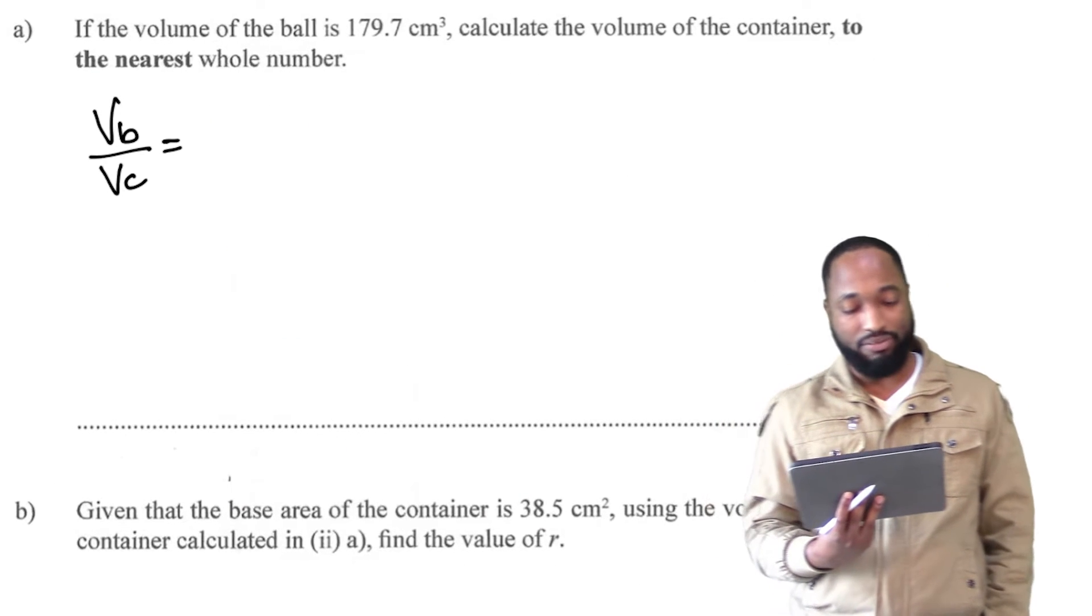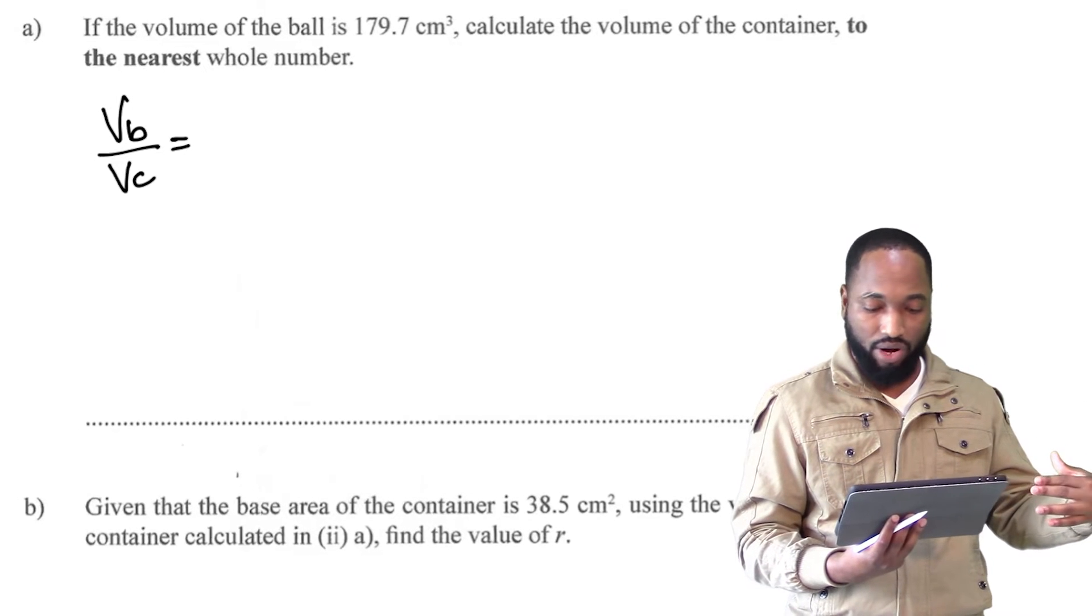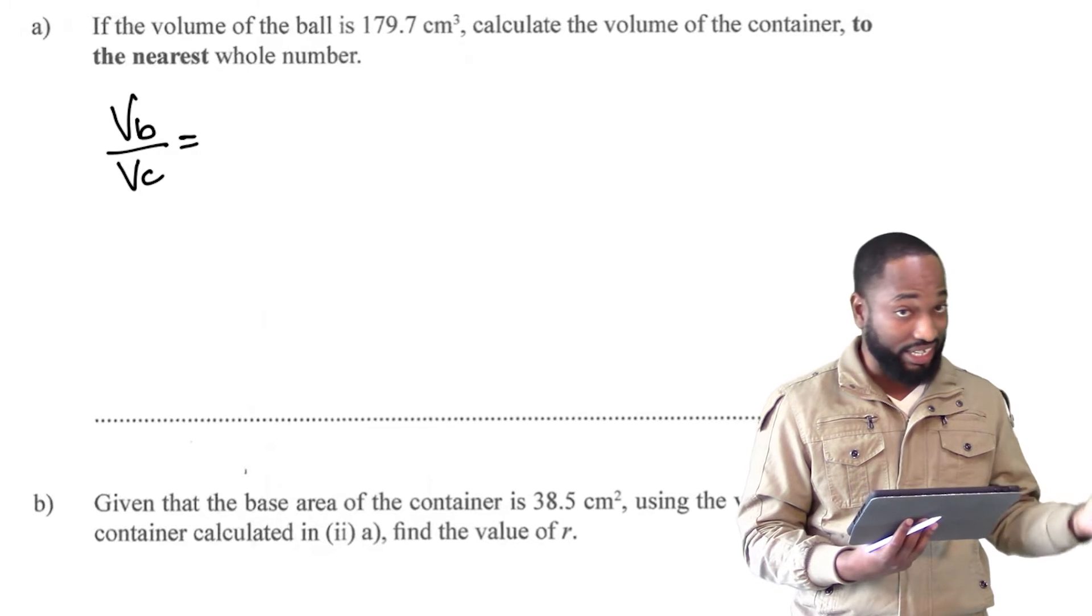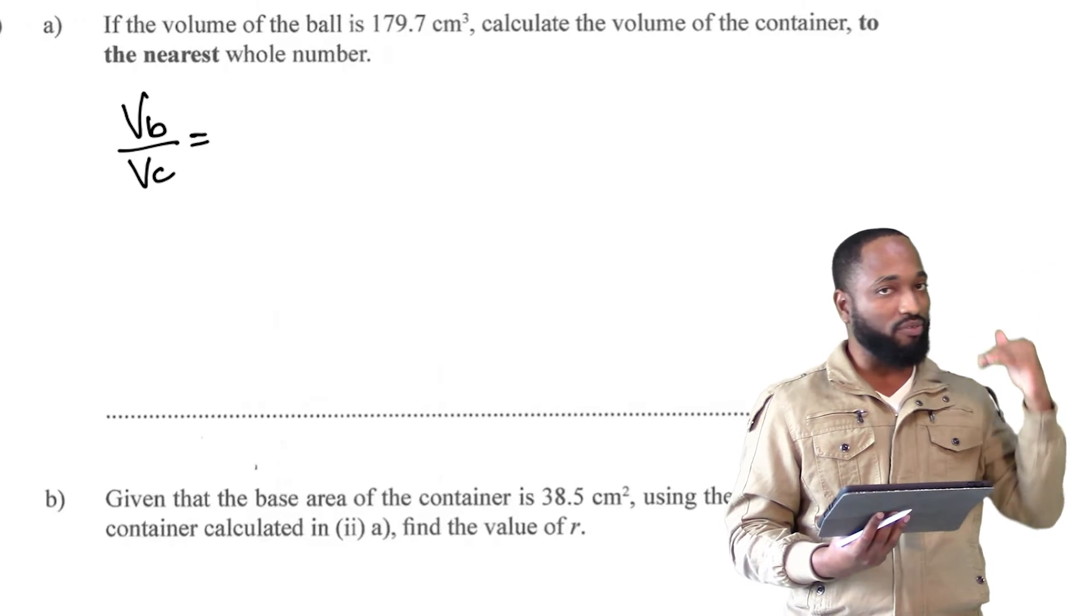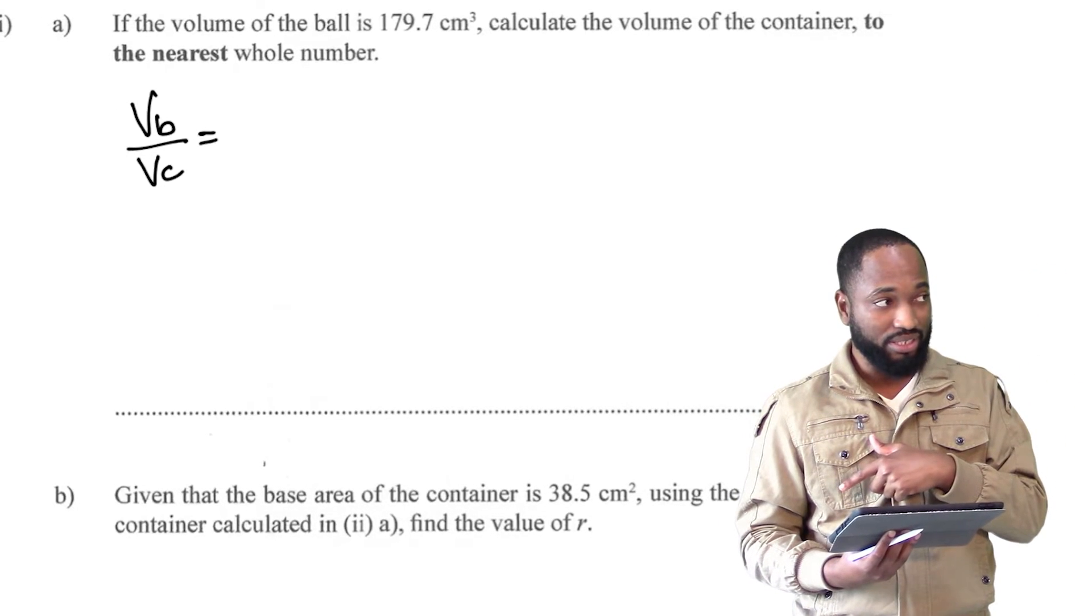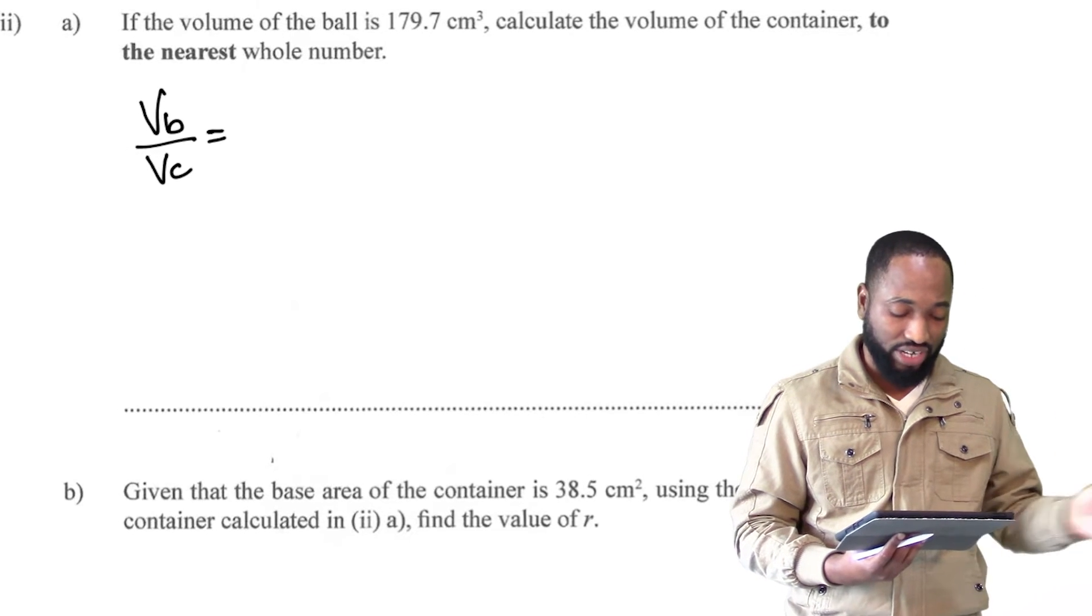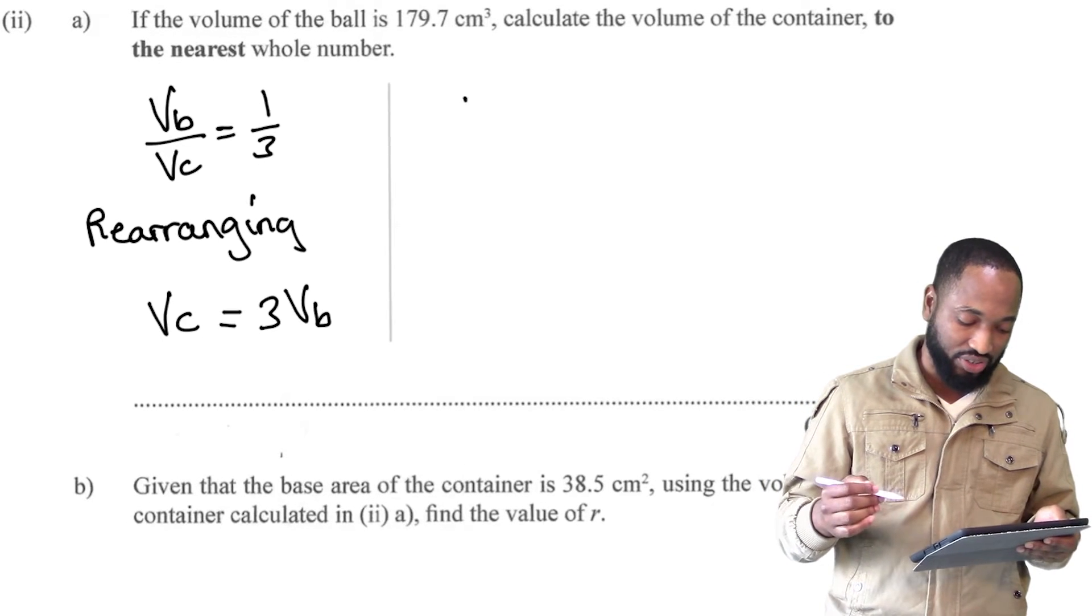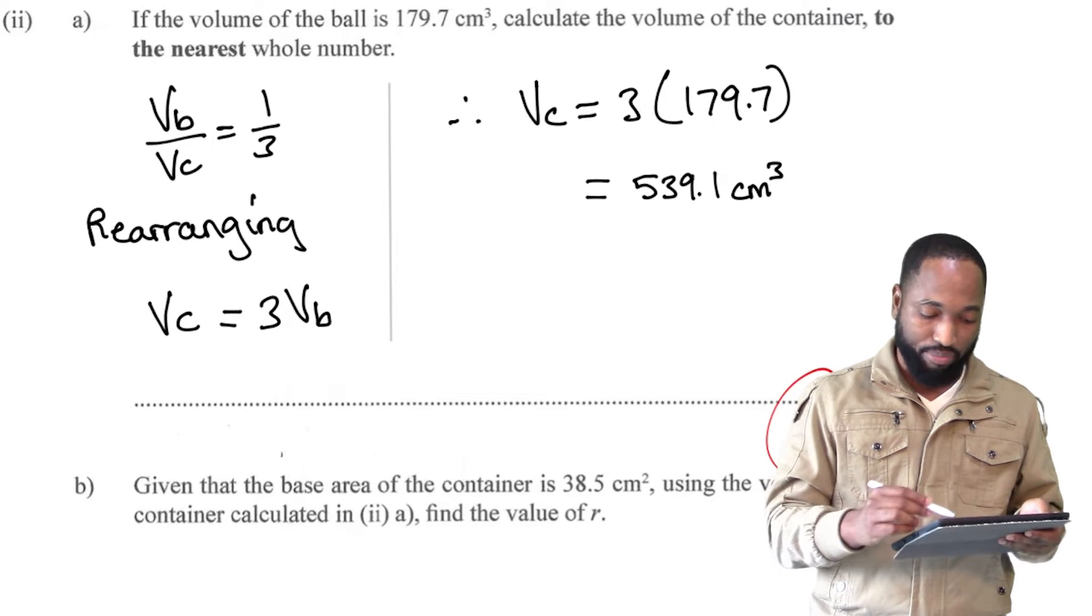So the next part of the question is, if the volume of the ball is, they give you the volume of the ball and now you need to determine the volume of the container. Well, we already established a ratio saying that the volume of the ball divided by the volume of the container is one third. So it means if they give you the volume of the ball, just multiply by three and you should get the volume of the container. Or you could just write this out in terms of algebra rearranging. The volume of the container is three times the volume of the ball. So that's a quick one mark to go.